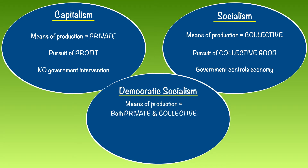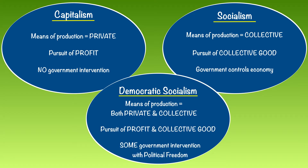There is a third option called democratic socialism, which you've probably heard a lot about recently with the presidential elections of the last couple cycles. Democratic socialism ideally is the best of both capitalism and socialism. The means of production is both private and collective, the government controls certain industries, the pursuit is both individual profit and the collective good, and there is some government intervention while allowing individual citizens a wide range of political freedom.